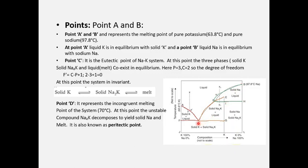Point C is the eutectic point of the sodium-potassium system. At point C, three phases are in equilibrium: solid potassium, solid sodium potassium, and the melt. Substituting three phases and two components into the reduced phase rule expression gives a degree of freedom of zero — so the system is invariant at this point.